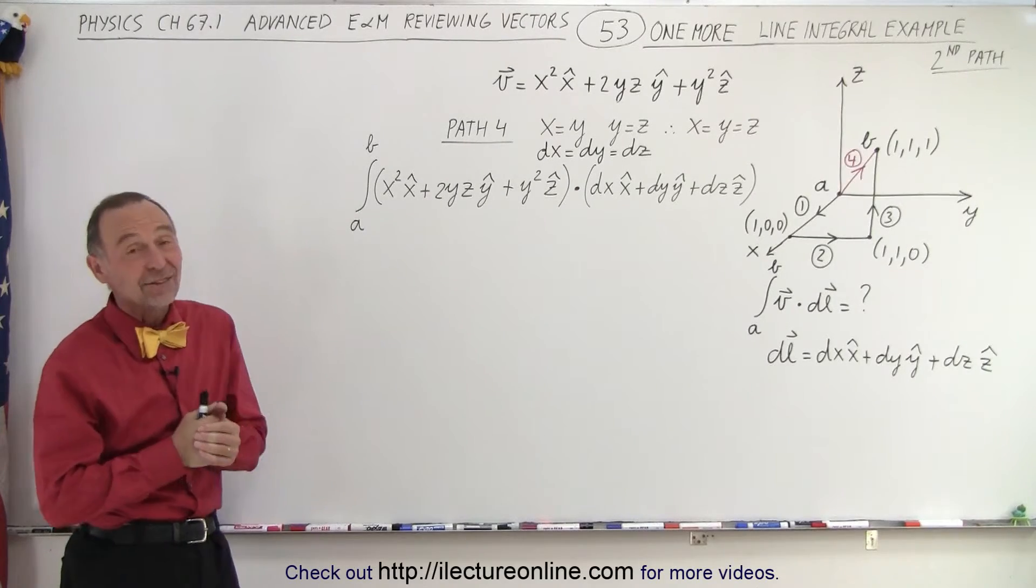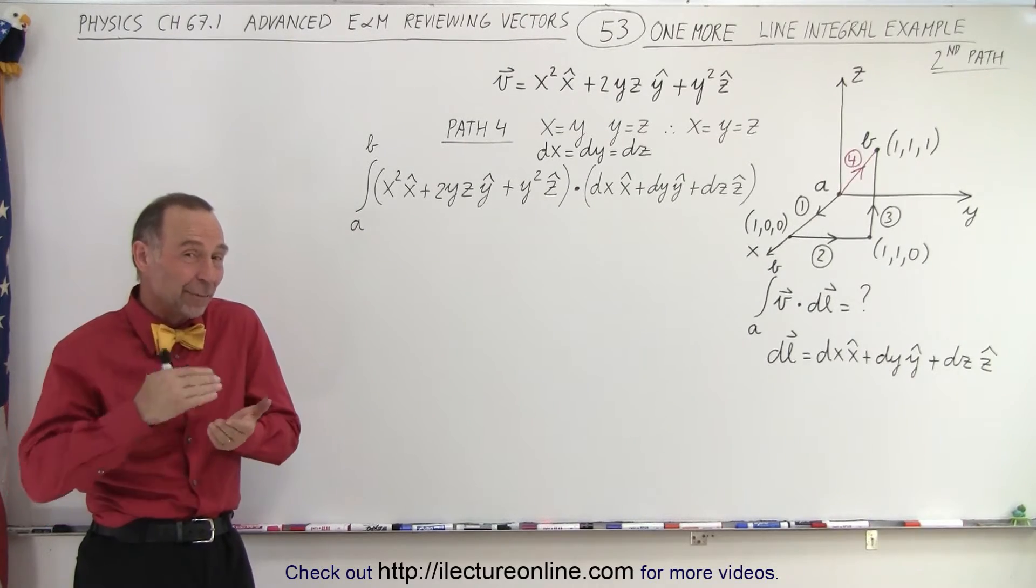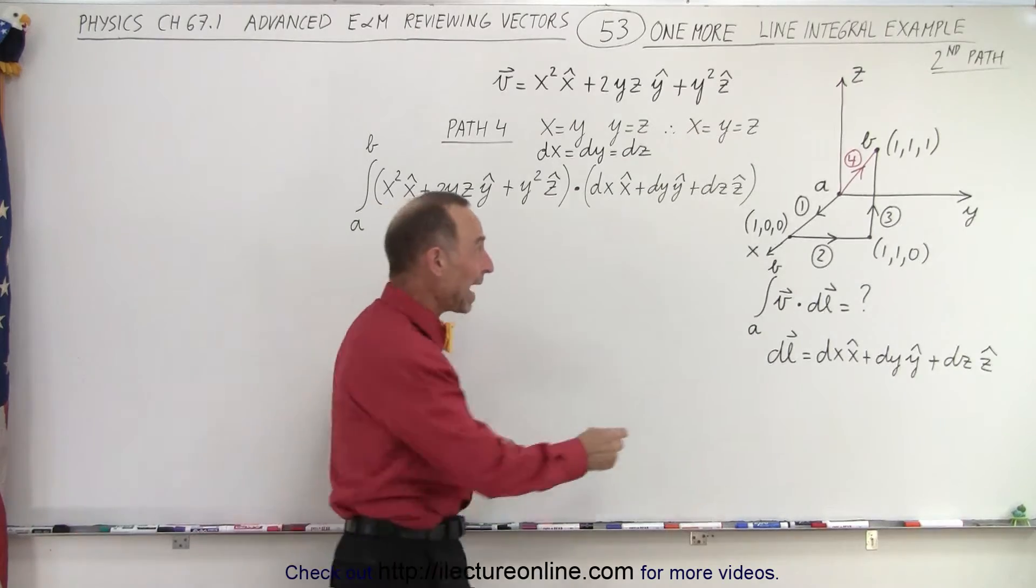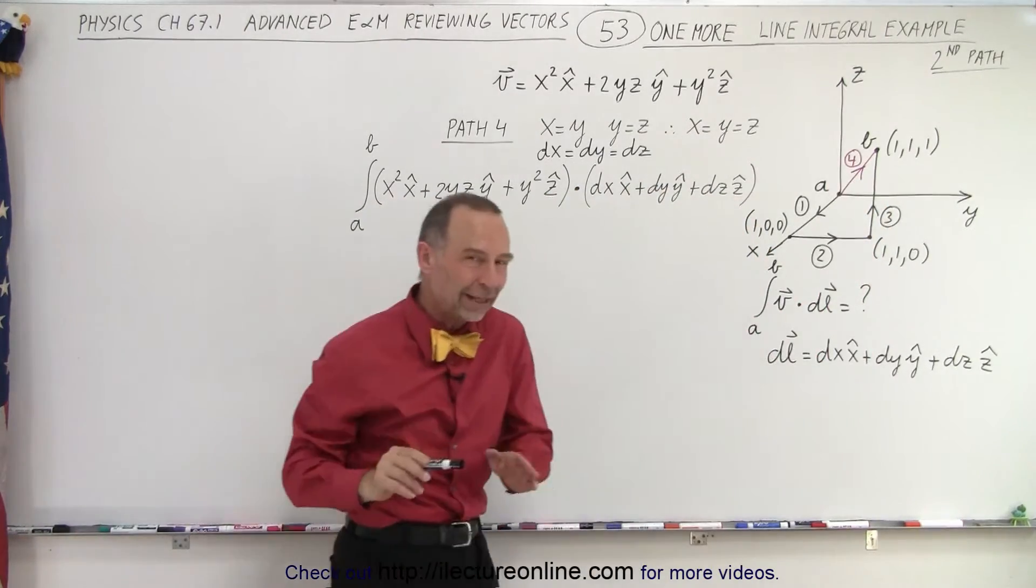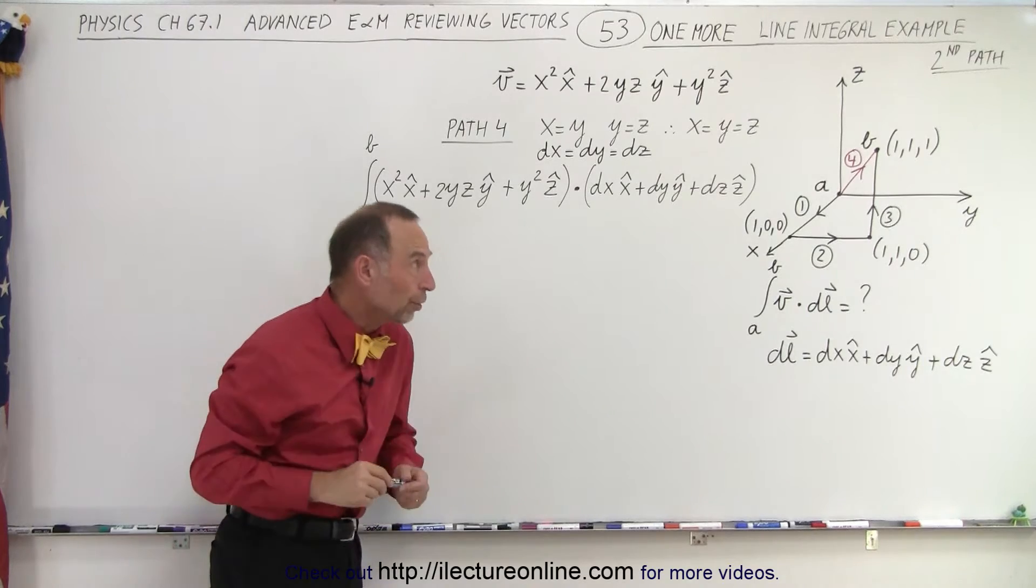Welcome to ElectroLine. Now let's take the same travel from A to B, but not along path 1, 2, and 3. We'll call it path 4 directly from the origin to point B.